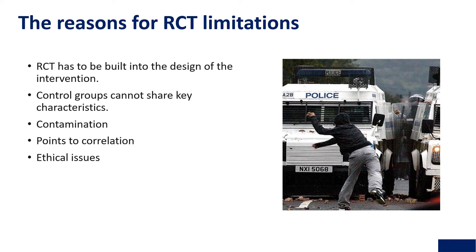RCT limitations include that it has to be built into the design of the intervention from the start, and control groups cannot share key characteristics. There is also the possibility of contamination — meaning the non-receiving group could, in fact, access the treatment by seeing what's happening in another community and replicating it, which would skew the results. It points to correlation rather than causation, and there are ethical issues about some groups receiving the treatment while others do not.